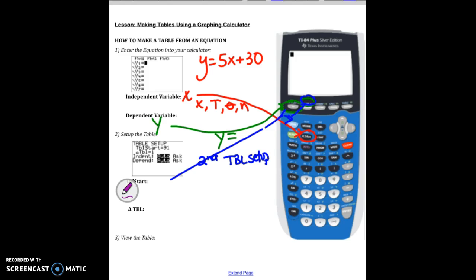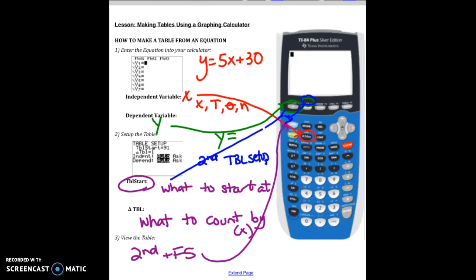So if I said something like this table start, that tells you what to start at. And then delta table says what to count by for your X's to view the table. You do second and F5. So that's going to be second and then go up here to F5 and you'll get to see your table.